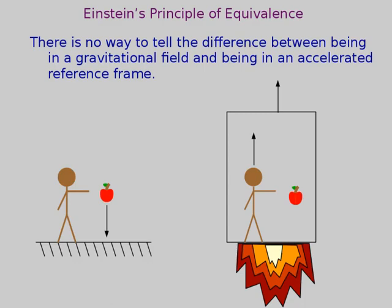We start with the rocket at rest, then accelerating upward. The guy lets go of the apple. In the inertial frame of deep intergalactic space, there are no forces on that apple — it's not touching anything. Since it started at rest it will stay at rest. But the guy is being pushed up by the rocket and accelerates upward at 9.8 m/s². Pretty soon the bottom of the rocket catches up with the apple and hits it. From the guy's point of view, he sees the apple fall towards the bottom of the box — exactly the same as what the person on the left sees.